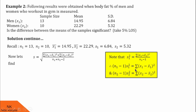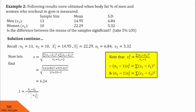Now let us substitute for summation (x1 minus x1 bar) squared and summation (x2 minus x2 bar) squared into the formula and substitute the values. You can pause the video and check the substitution. After simplification, we found s equals 6.24. Now let us substitute this value of s into the test statistic. After simplifying, we get the test statistic is minus 2.80.